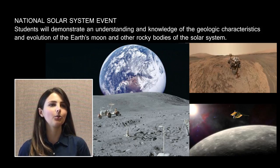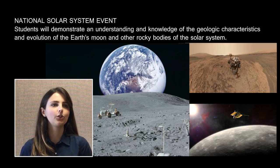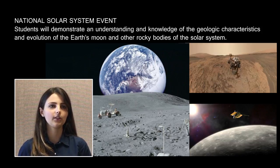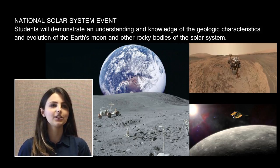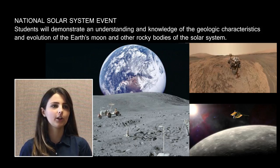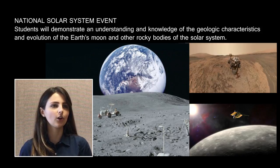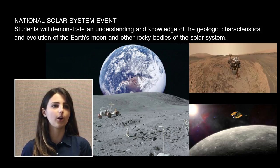Each team may bring two 8.5 by 11 inch two-sided pieces of paper containing information in any form from any source for use during competition. The notes may be used during all parts of the event. Each student is also permitted to bring one non-programmable calculator to perform calculations during the event. The focus for part one of this event is identification and knowledge of the geologic surface features and internal structure of the objects listed in the first section of the rules.